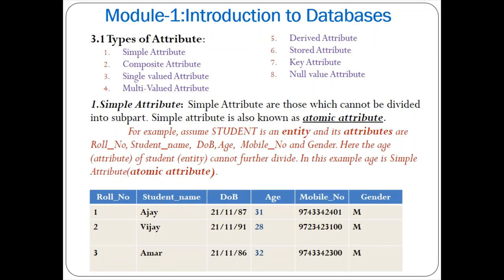There are different types of attributes: simple attribute, composite attribute, single-valued attribute, multi-valued attribute, derived attribute, stored attribute, key attribute, and null value attribute.